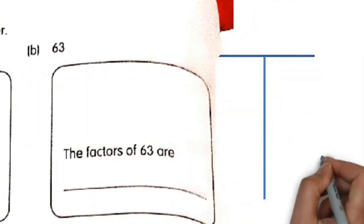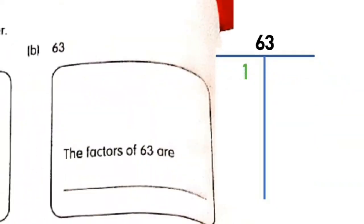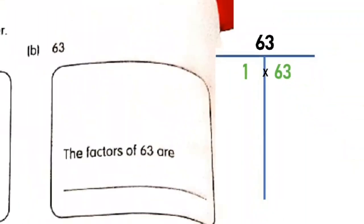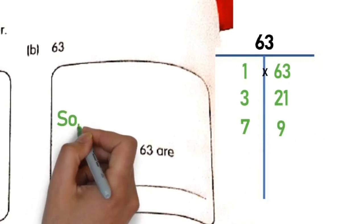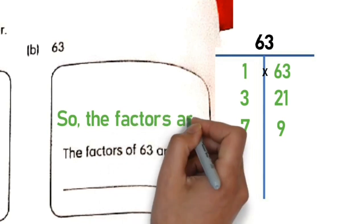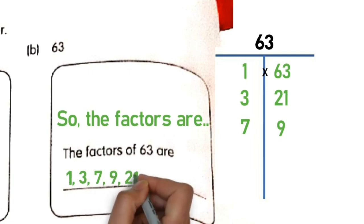Let's come to another question. We need to find the factors of 63. Well, obviously the first one will be 1 and also the number itself, which is 63. We cannot divide it by 2. So the only number we can divide is 3 times 21. And then we know there is 7 times 9 equals 63. So the factors are 1, 3, 7, 9, 21, and 63.